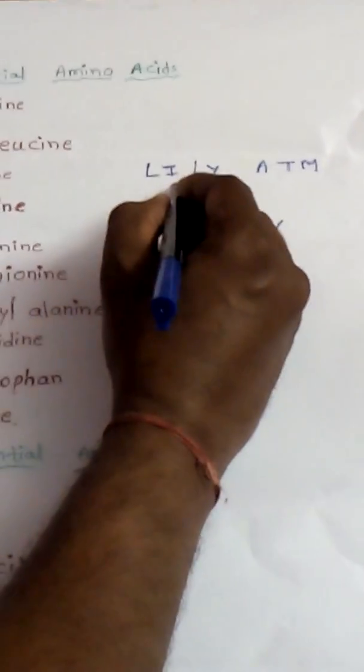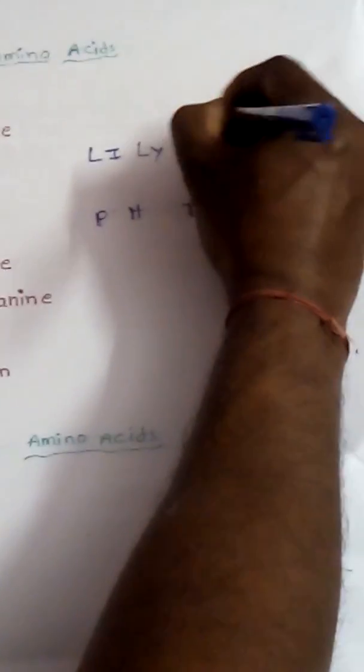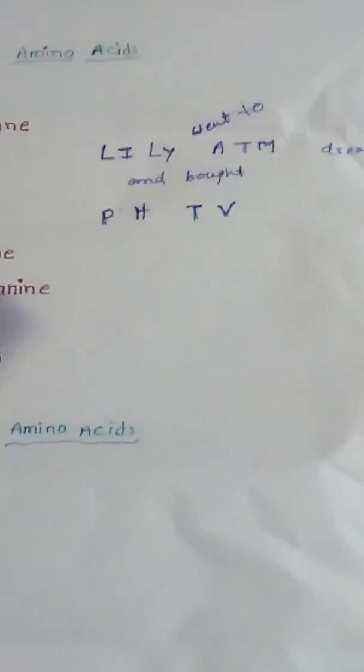We can make a sentence using these letters: Lily went to 2 ATM, drew money, and bought phone and TV. Like that we can easily remember the essential amino acids forever.